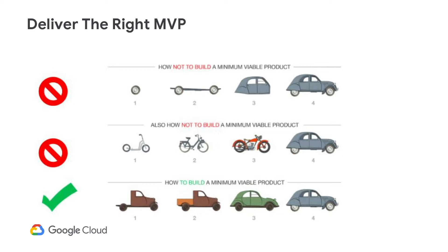The picture here shows three different ways to build a transport device over four releases with the business goal of getting from point A to point B. The first example should be avoided, which is building incrementally — after each release there's no business value, since we only get from point A to B at the very end in release four. The second example is better; it achieves the goal in each release with a working device, but forces the team to rework the product in every release, leading to a lot of waste and throwaway effort. The third example is the MVP approach: we can transport from A to B in each release, but we have minimal rework since we're building on top of the previous release's functionality in a smart sequence.